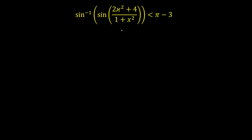Our question is to find the value of x for which this given inequality is satisfied. I see the function sin inverse of sin of this input. I cannot open this directly — I cannot say sin inverse of sin of x is equal to x. Once I know the value of this input, I can open sin inverse of sin of that input. So I am going to estimate the value of the input, that is (2x² + 4) divided by (1 + x²).